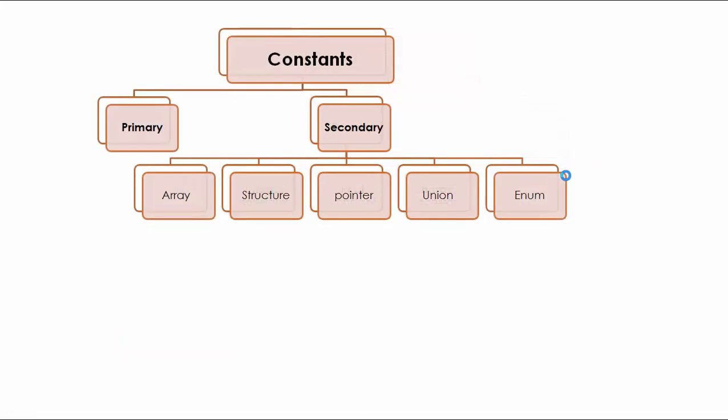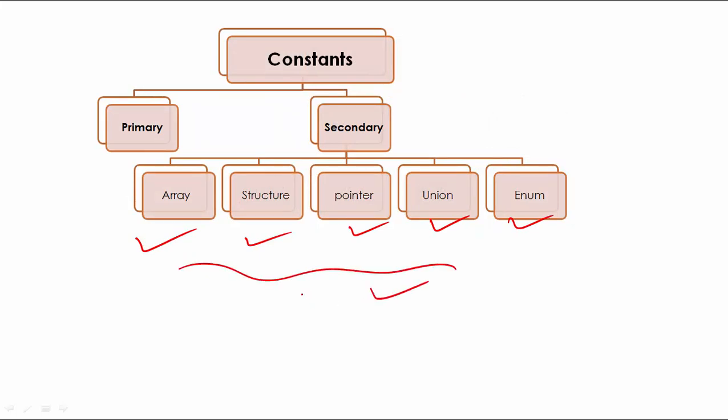The secondary constants are also there — array, structure, pointer, union, and enum — but these are not required right now. We will understand them once you are more confident with C language.